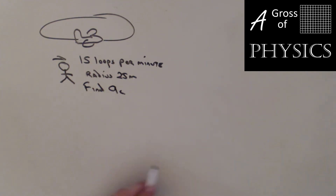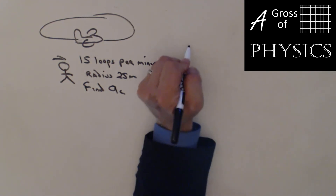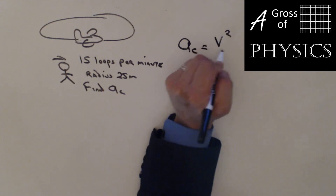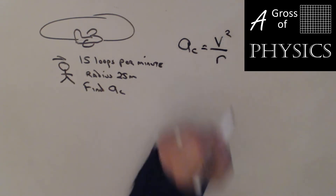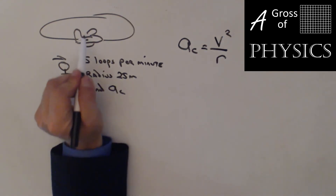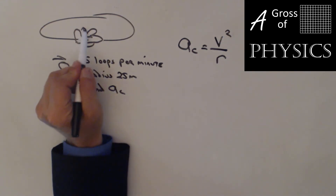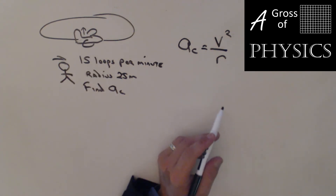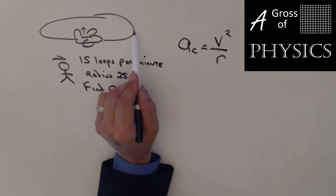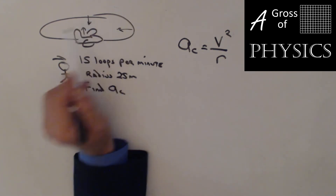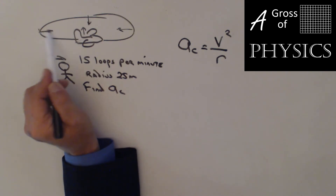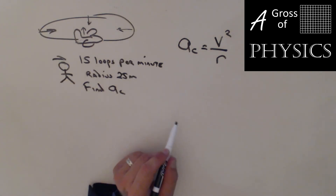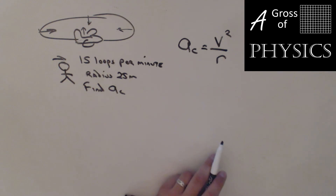We know the centripetal acceleration equation is v²/r. For a horizontal circular path, the acceleration points inward to the center at all points around the circle. We already have the radius — now we need the speed.